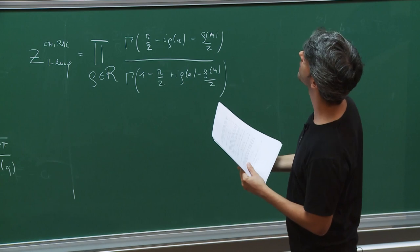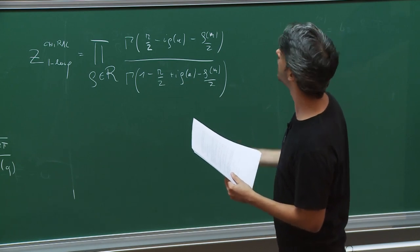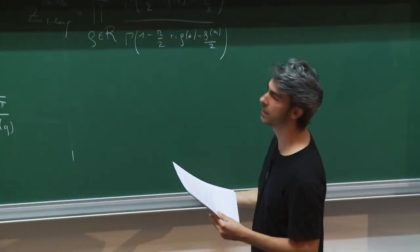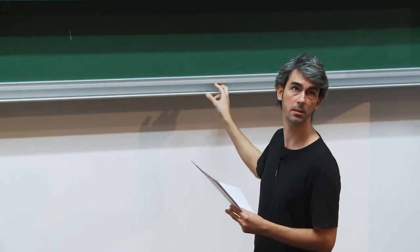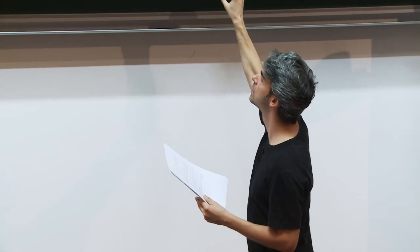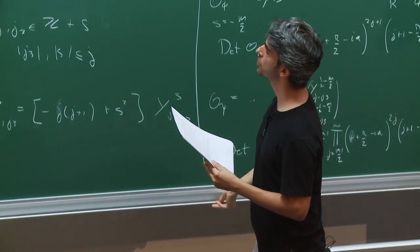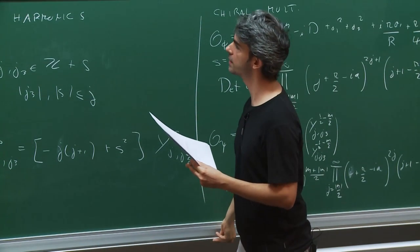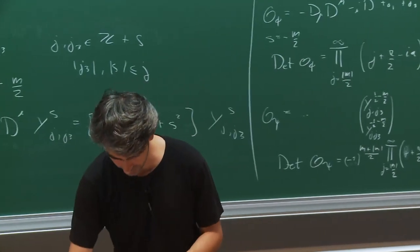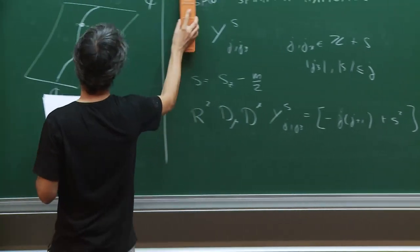This is the result for the chiral multiplet. Now we want to do something similar for the vector multiplet. The computation is similar, but the key difference is that we need to fix the gauge, since we are dealing with a gauge theory.